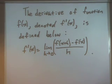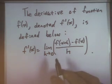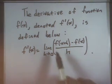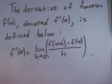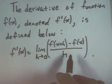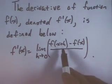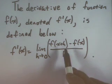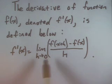The derivative of function f of x, denoted f prime of x, is defined as the limit as h goes to zero of the difference quotient. This function is called the difference quotient. We may interpret this as the slope of a secant line going through points on the curve at x and x plus h, where h is the distance from one x value to the other. The definition of the derivative is the limit of this difference quotient as h goes to zero.